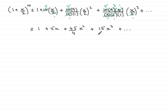And there you have the first 4 terms in the expansion of (1 + x/2)^10.